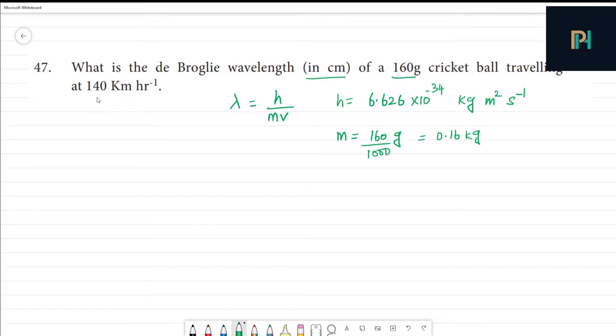Next, we have traveling at 140 km per hour. That is velocity. Velocity is equal to 140 km per hour.